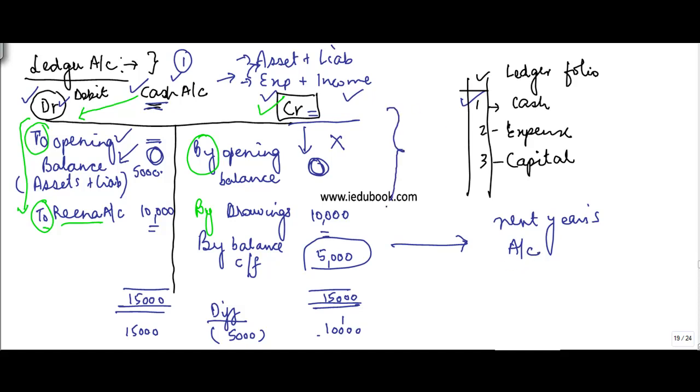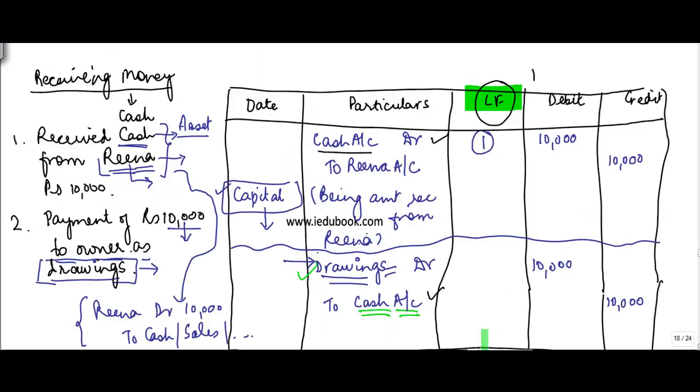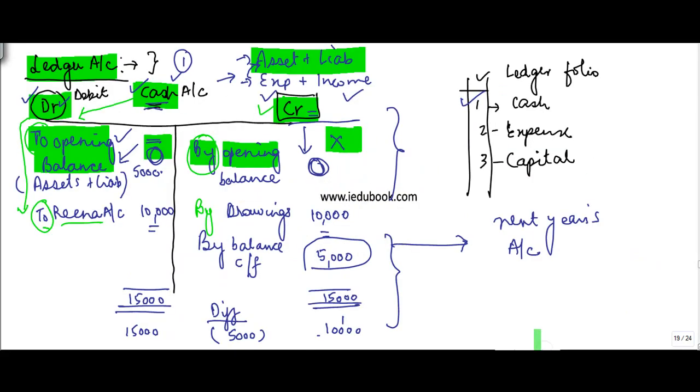This T-shaped account is called a ledger. In a ledger you would have the heading. On the left-hand side you have debit, right-hand side you have credit. You may have an opening balance in case of assets and liabilities. Depending on whether it's an asset or liability, the balance might come on the debit side or the credit side. You use 'to' - cash account debit to Rena account ten thousand. This is how it comes. Take the balance, balance it out, and you're done.